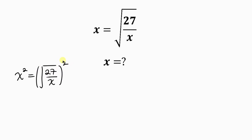Notice that this square cancels out the square root, so that we have x squared equal to 27 all over x. We no longer have the square root there. But there is something we need to understand: whenever we are getting rid of square roots by taking the square of both sides, we must check our final solutions to see if they are correct.